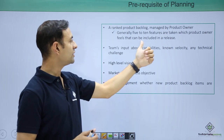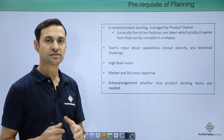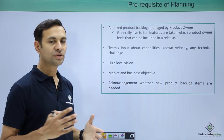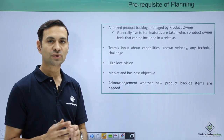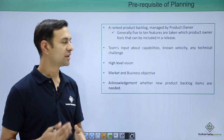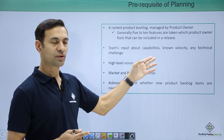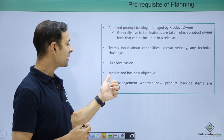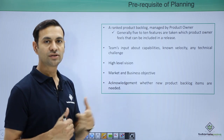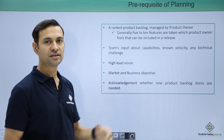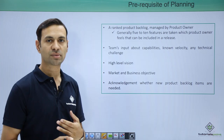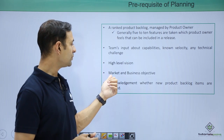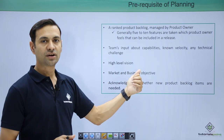Team input about capabilities and velocity — how much effort they can put in this particular time frame — is needed so that a particular feature or user story can be developed, and to identify any technical challenges. The high-level vision should be completed, and the market and business objectives should be met for these features. If a feature gives no business value to the customer, there is no use of developing it at that time. So we have to see whether market and business objectives are met or not.